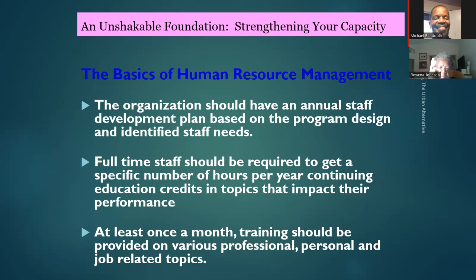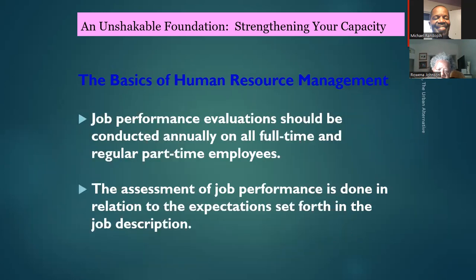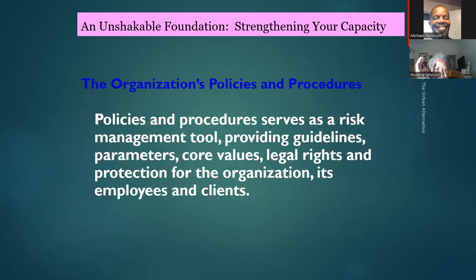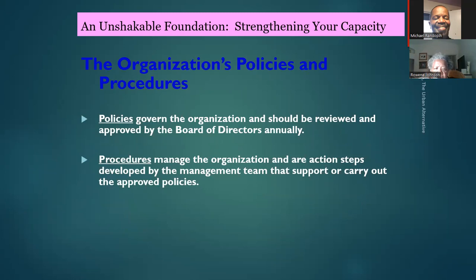Full-time staff should be required to get a specific number of continuing education credit hours per year on topics that impact their performance. At least once a month, training should be provided on various professional, personal, and job-related topics to keep staff up to date. Job performance evaluation should be assessed in relation to job descriptions, and you should have policies and procedures that serve as a risk management tool providing guidelines, legal standards, and core values.